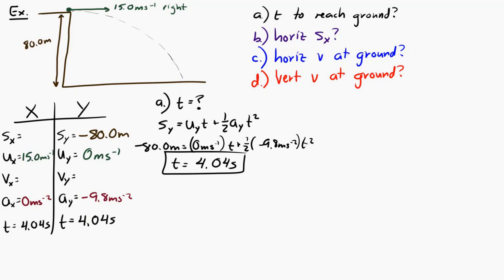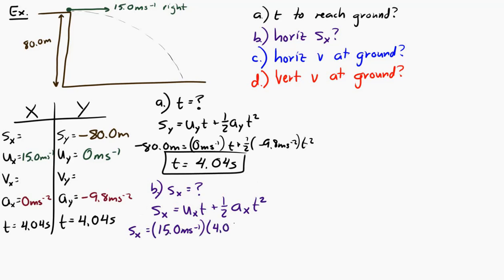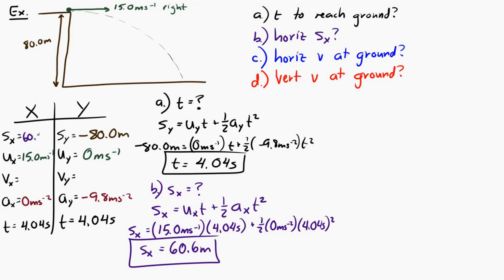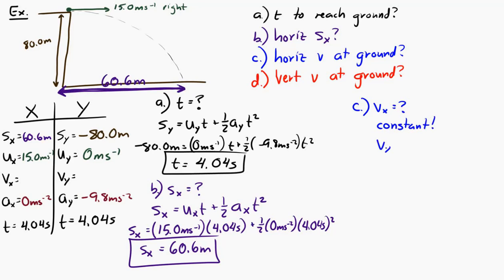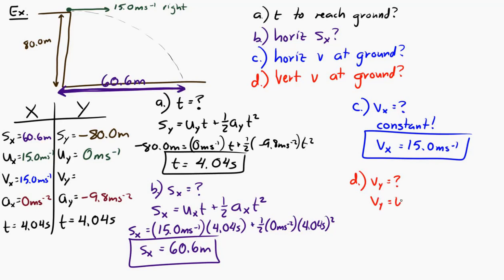For part B, solving for horizontal displacement Sx, I use the kinematic equation with the known time. The horizontal displacement when it hits the ground is 60.6 meters — that's the horizontal distance from start to end. For part C, horizontal velocity is constant, so it's 15 meters per second — no math necessary. For the vertical velocity at the ground, using another kinematic equation, the vertical velocity is negative 39.6 meters per second.